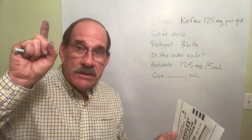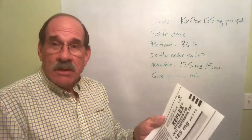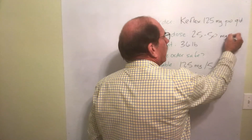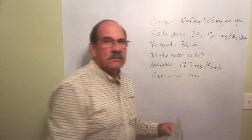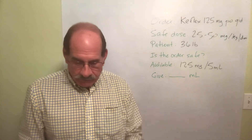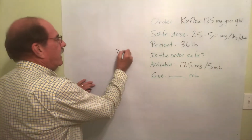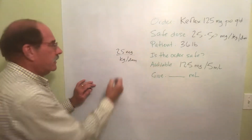This is different from the other one we just did — that was just one number. Here there are two numbers: a safe dose range. Anything between 25 and 50 milligrams per kilogram per day is the usual children's dose. So the safe dose is between 25 and 50 milligrams per kilogram per day. There's a lower and a higher safe amount.